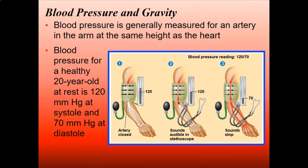Blood pressure is generally measured in an artery in the arm that's at the same height as the heart — that's usually why you sit in a chair with your arm resting on a table. For a healthy 20-year-old, it's about 120 millimeters of mercury at systole and 70 millimeters at diastole. When I was in school it was 120 over 80, so they've lowered that a bit. If you're a little bigger or smaller it might change, but 120 over 70 is about normal.